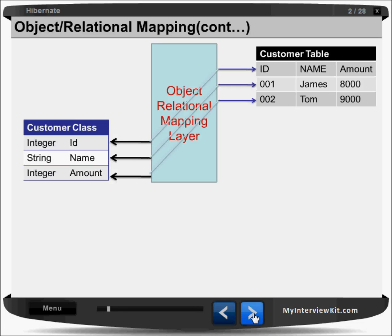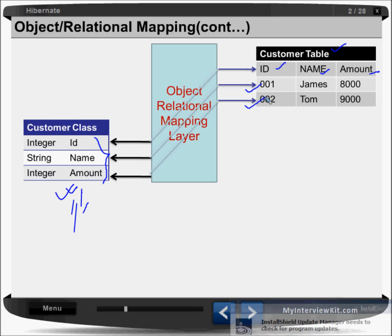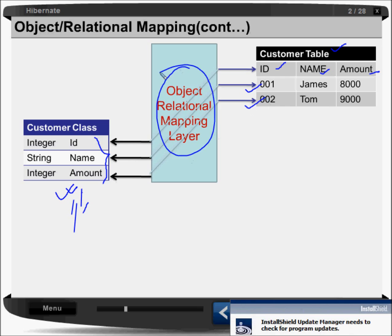For example, if you have a Customer class with properties like ID, name, and amount, and on the other side you have a Customer table in your database with columns for ID, name, and amount — then this object with its values will get stored as a record in that table. Another object, another value, another record will get inserted. I will show you how this magic part works.